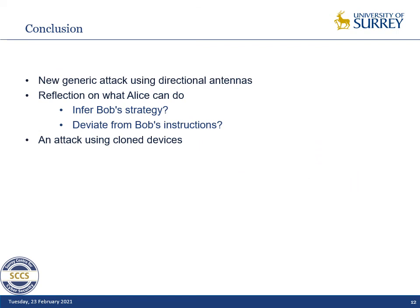To conclude this talk, let's go through the main points of the paper. We show a new generic attack using directional antennas that can break the terrorist fraud resistance of most protocols. This leads to new reflections on what Alice can do — in particular, whether she can infer Bob's strategy and what happens in that case, and if she can deviate from Bob's instructions and what she can gain.